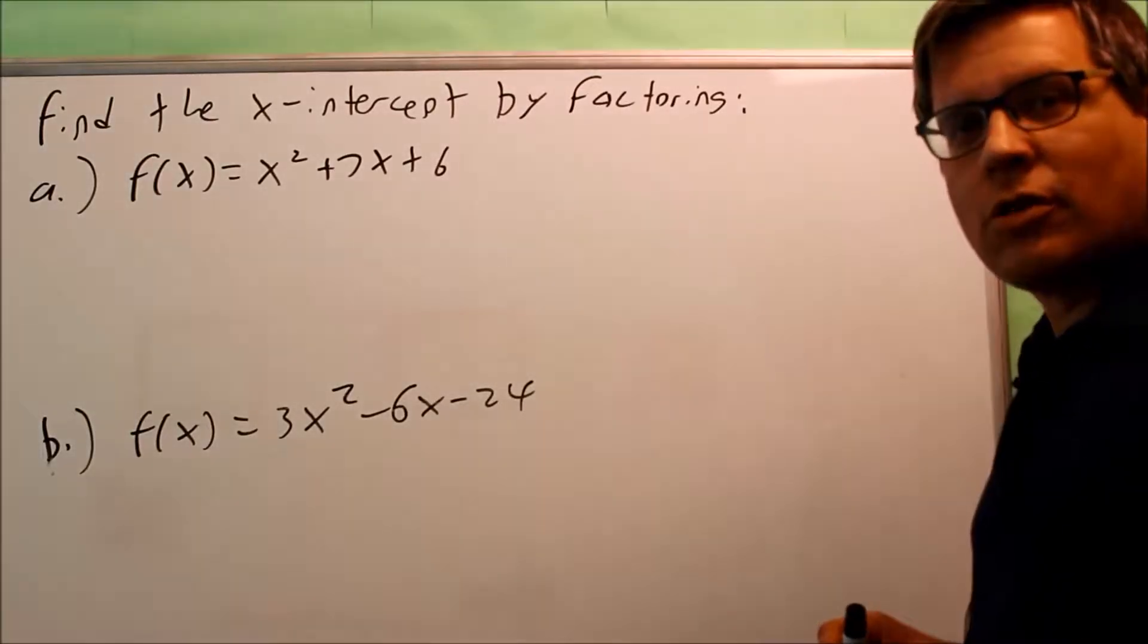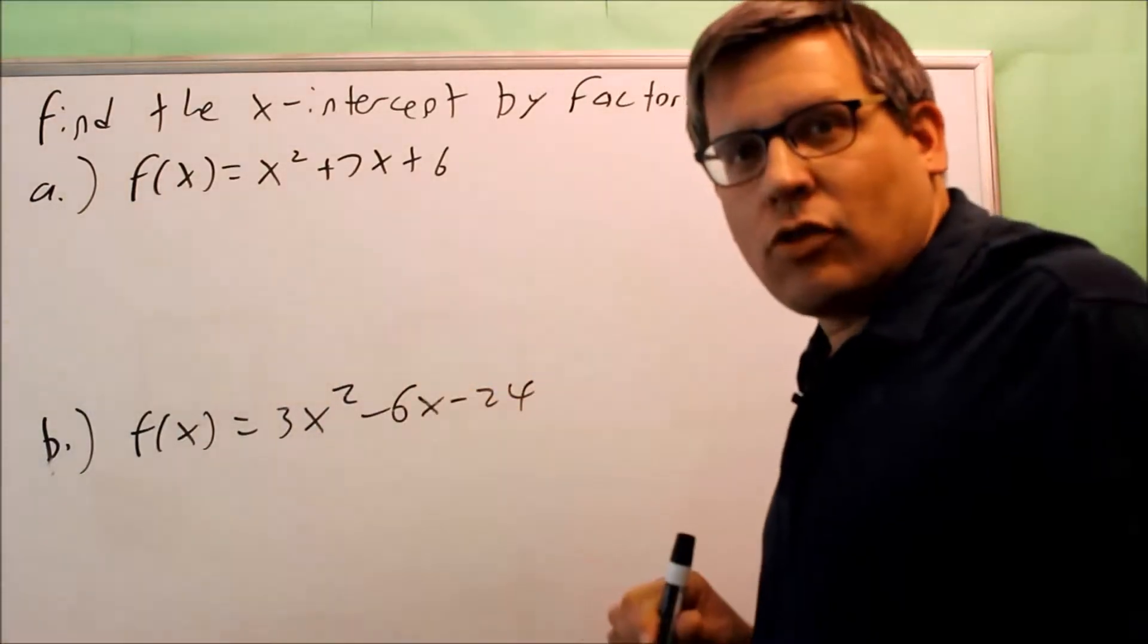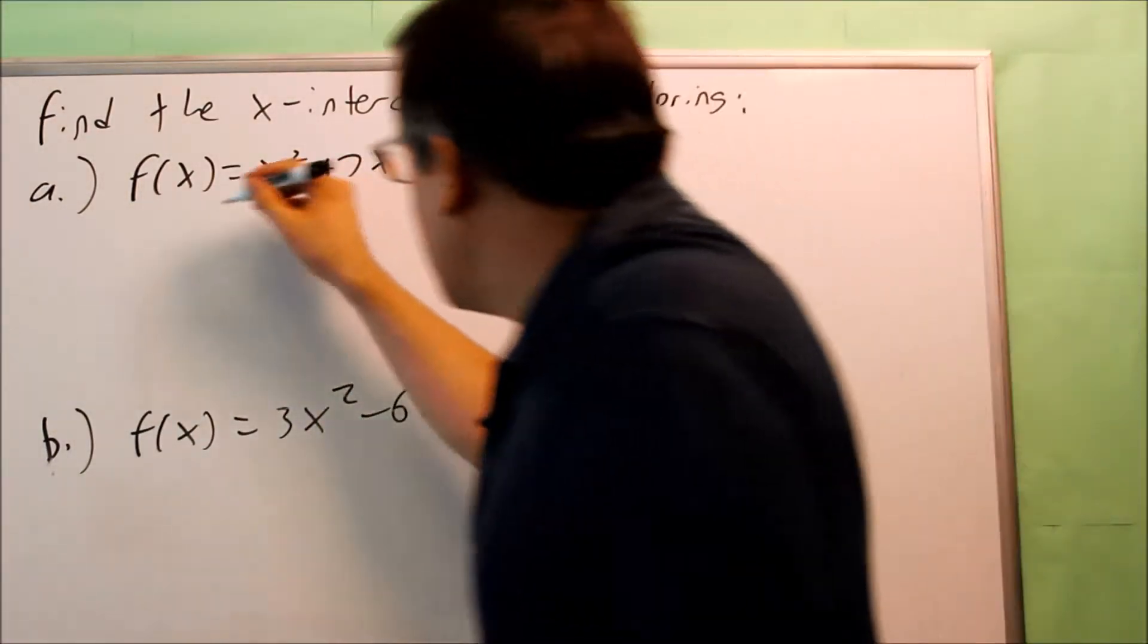We want to find the x-intercept by factoring. To find the x-intercept, you need to put a 0 in for the y. In this case, our y is f of x.